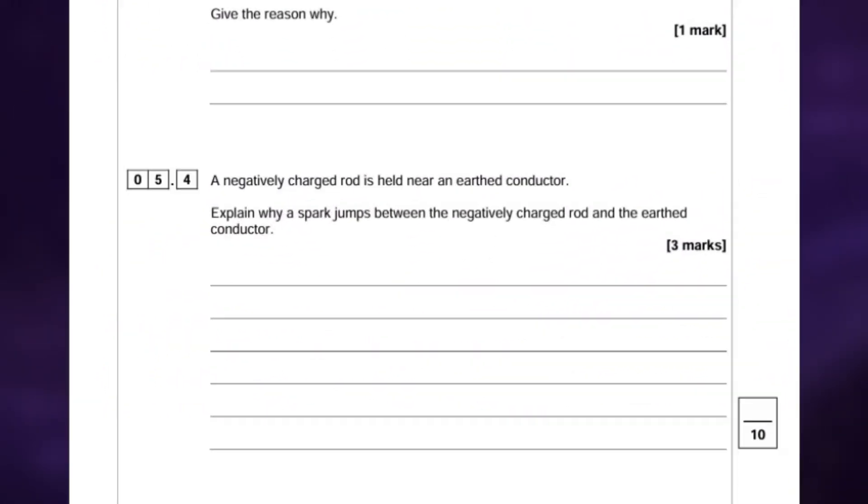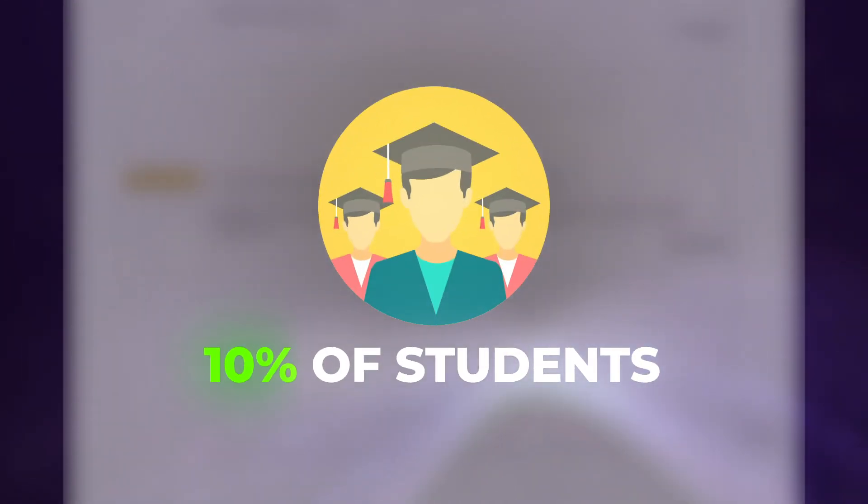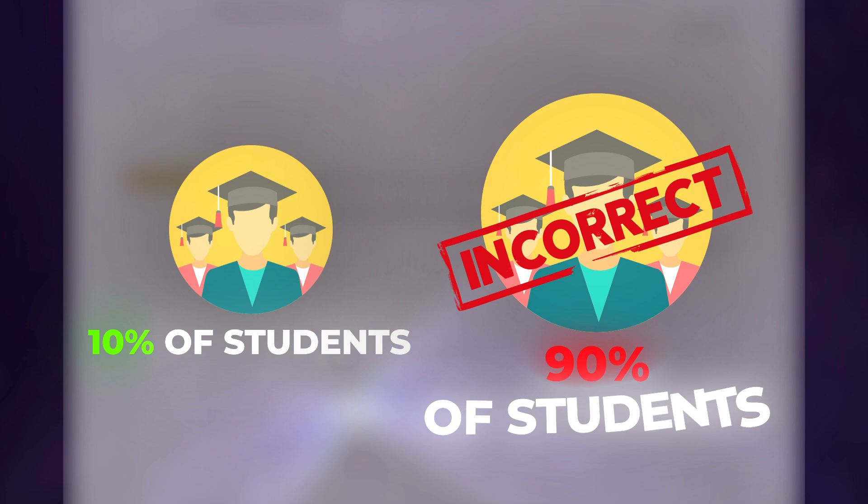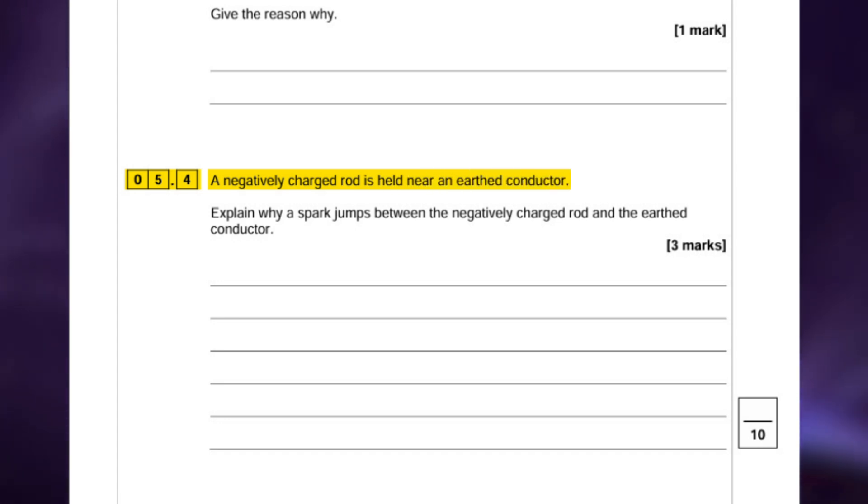The first question that was poorly answered on this paper was question 5.4 and only 10% of students got all the marks for this question, leaving 90% getting it completely incorrect or only gaining partial marks. The question reads: a negatively charged rod is held near an earthed conductor. Explain why a spark jumps between the negatively charged rod and the earthed conductor.